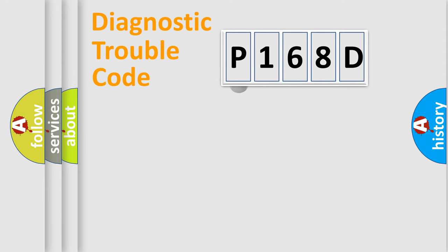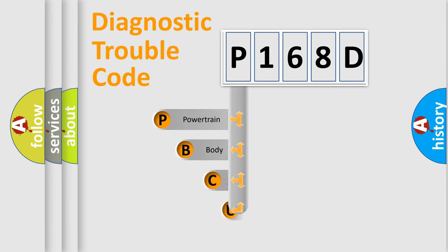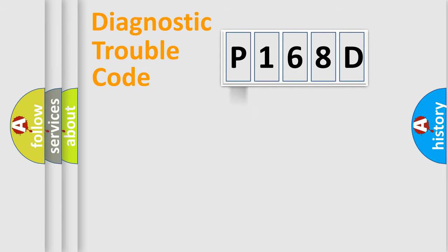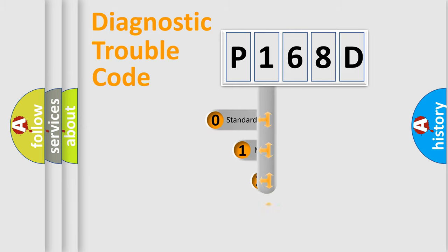First, let's look at the history of diagnostic fault code composition according to the OBD2 protocol. We divide the electric system of an automobile into four basic units: powertrain, body, chassis, and network. This distribution is defined in the first character of the code.